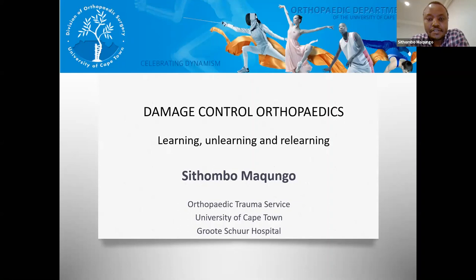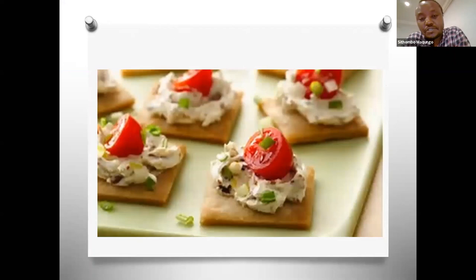What we should really be practicing is more of a middle ground, which is now called Early Appropriate Care. The subheading is learning, unlearning, and relearning. In orthopedics, most things we think we know are evolving concepts, so you need to be dynamic enough to change with the times where change is appropriate. There's no room for dogma or a rigid 'this is the only right approach.'